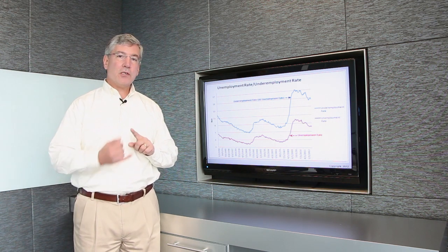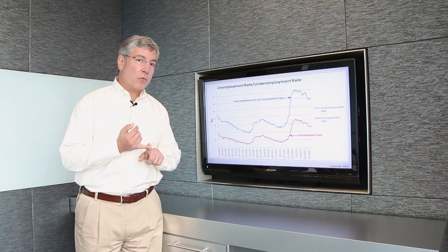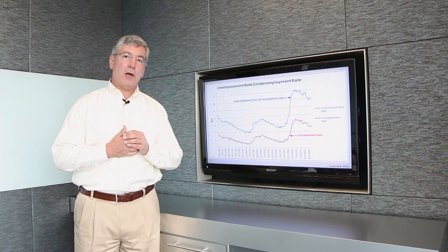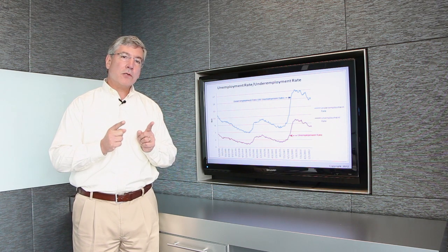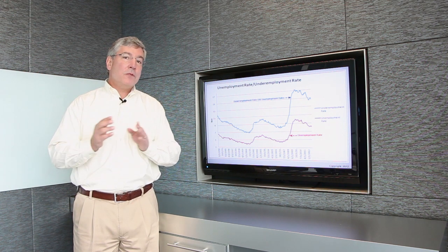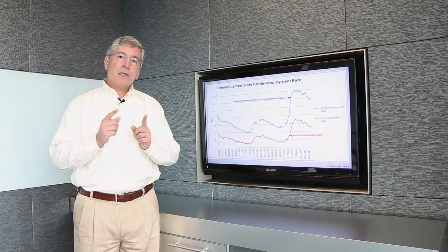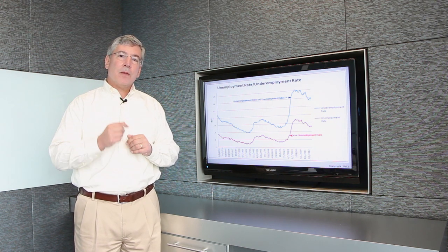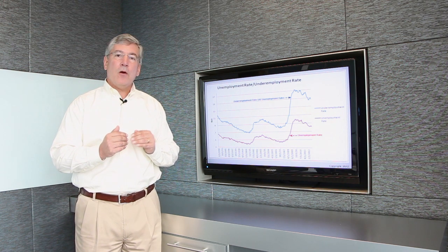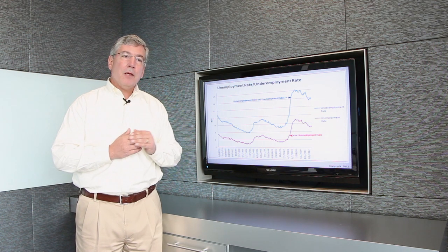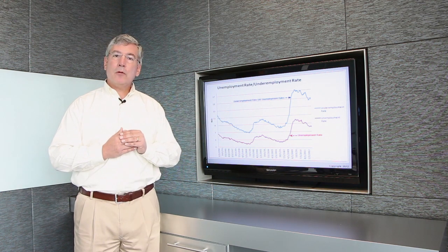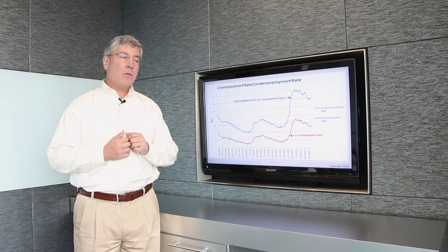Well, the underemployment rate includes those discouraged workers, those discouraged workers that cause the participation rate to go down. It also includes workers who may be working at Home Depot or at other jobs that really aren't consistent with their educational background or with their prior job. So the person working at Home Depot who used to be an accountant are underemployed relative to where they were.